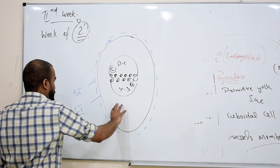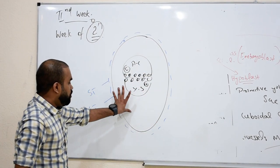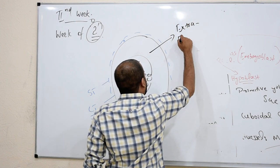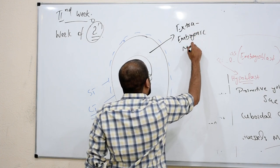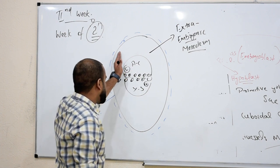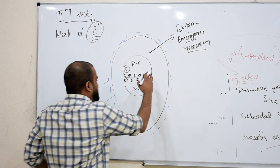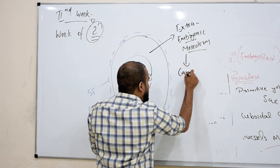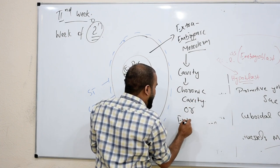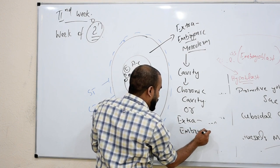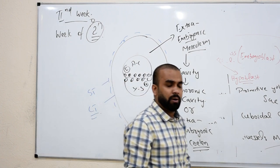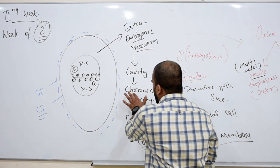There is a space visible between the inner cell mass and the outer cell mass. This space is called the extra embryonic mesoderm — 'extra' meaning outside the embryo. This extra embryonic mesoderm will itself form a cavity called the chorionic cavity, also known as the extra embryonic coelom.